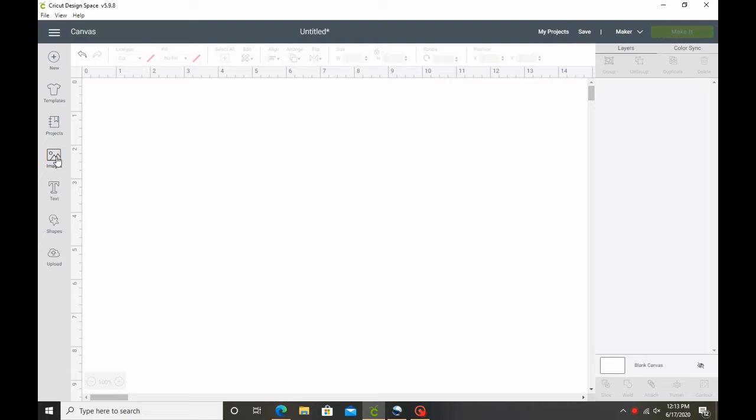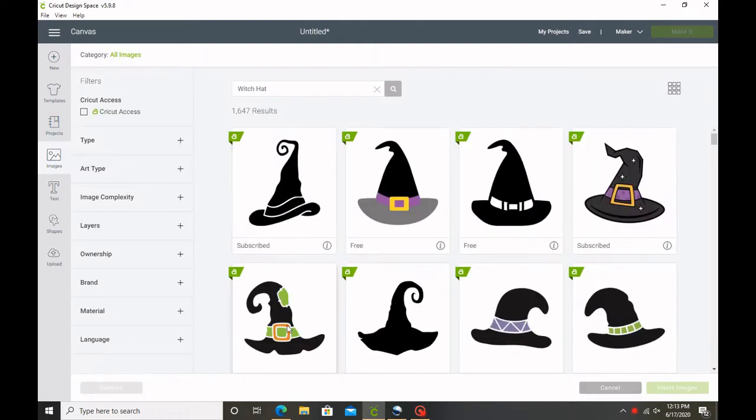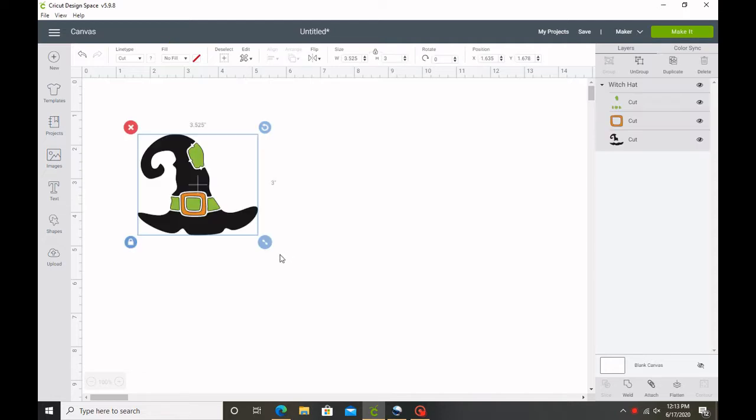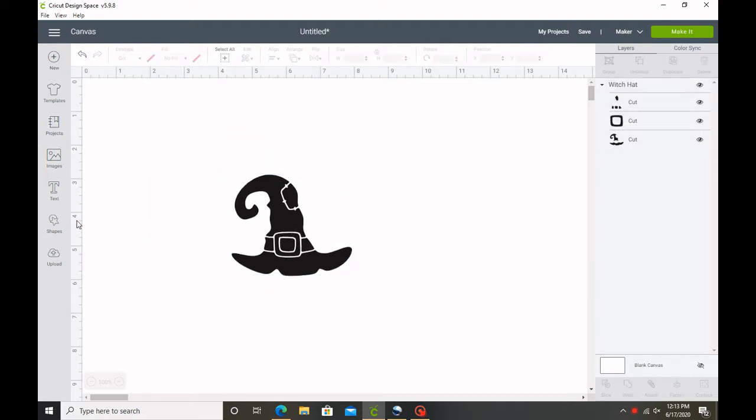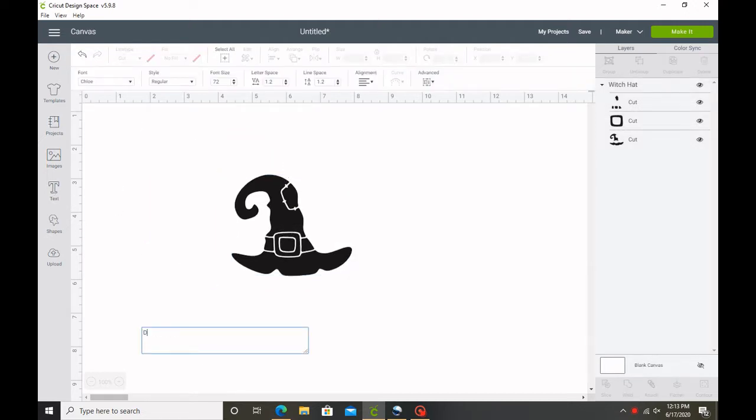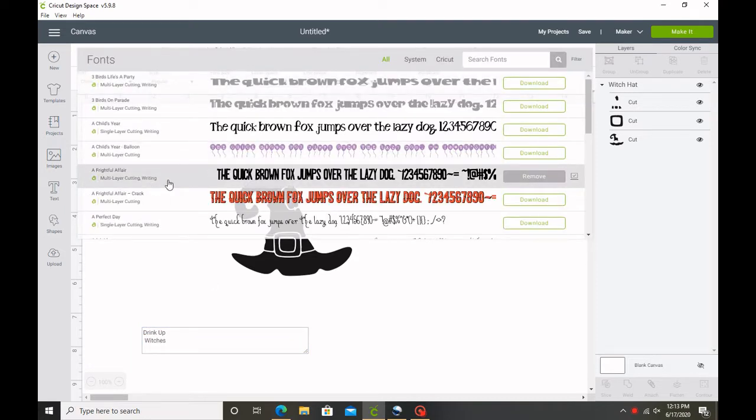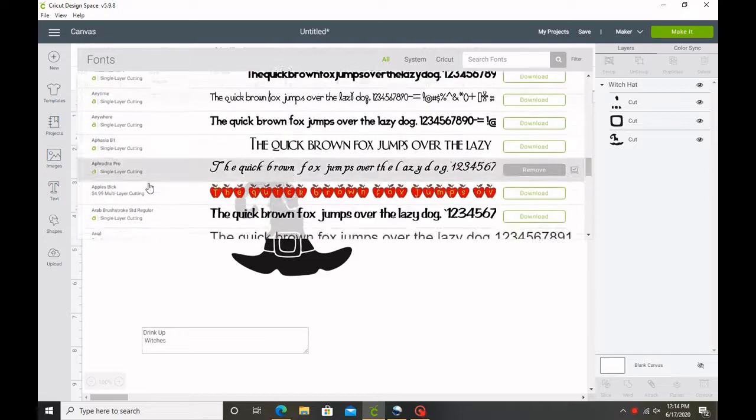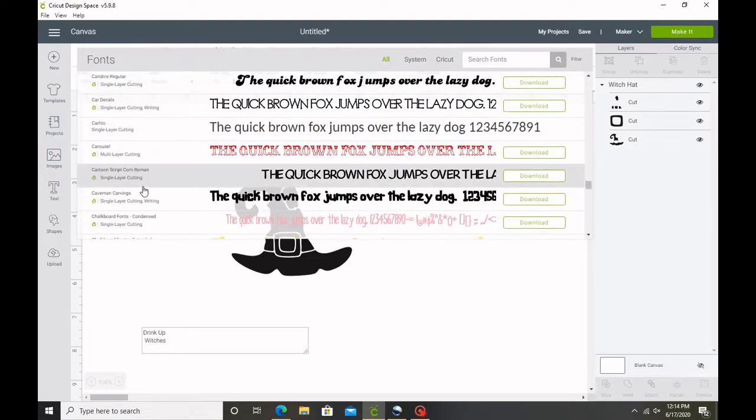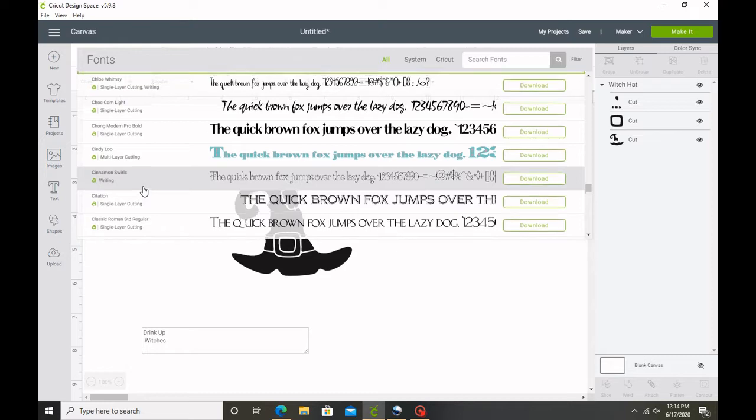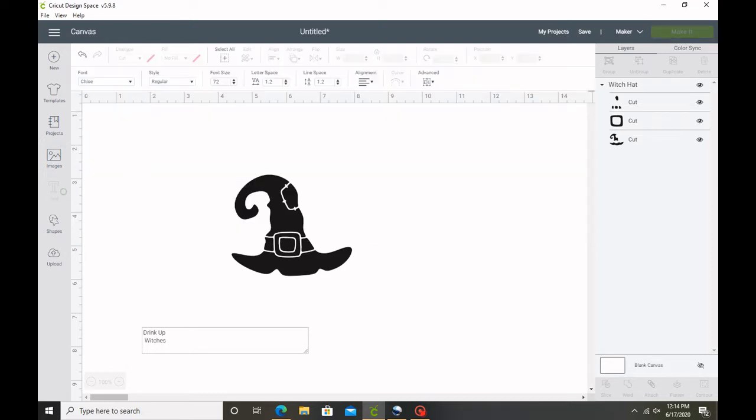Okay, so now you're gonna see me going to Cricut Design Space. I'm gonna click on Images, I'm gonna search up 'witch hat,' and this is the one I'm gonna pick. I don't have green or gold vinyl at the moment, so I'm just gonna make it all black. Then I'm gonna go to Text, I'm gonna type in my text, which is 'Drink Up Witches,' and then I'm gonna choose my font. The font I'm gonna choose is gonna be Chloe.